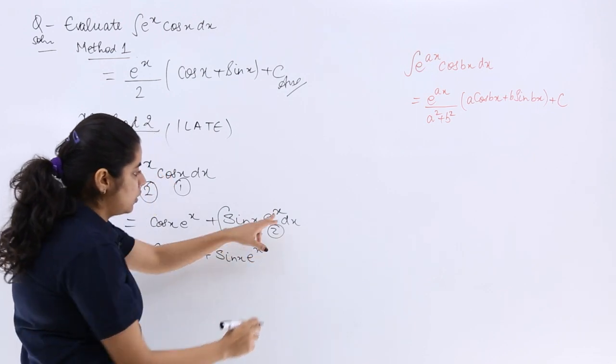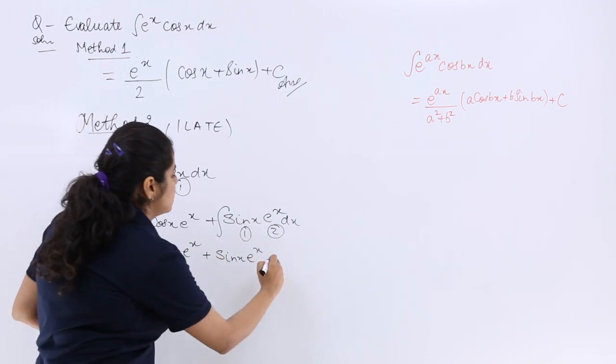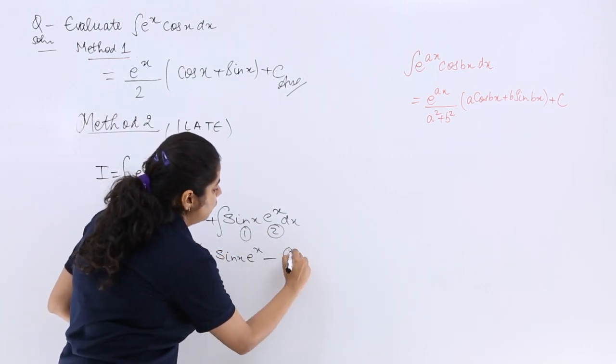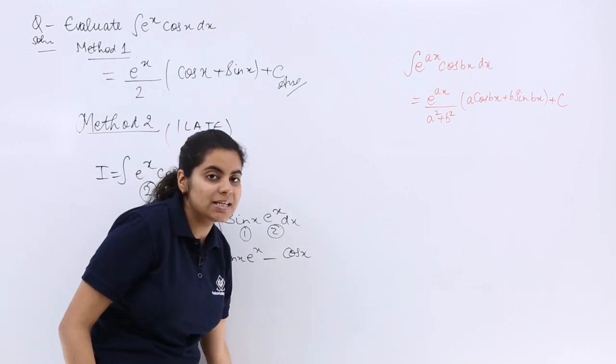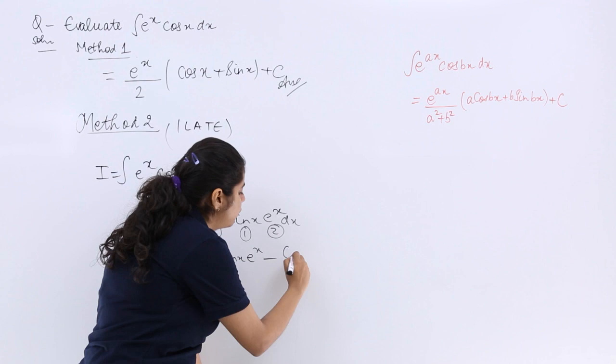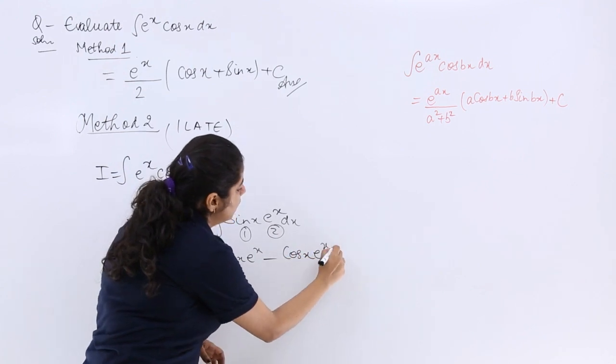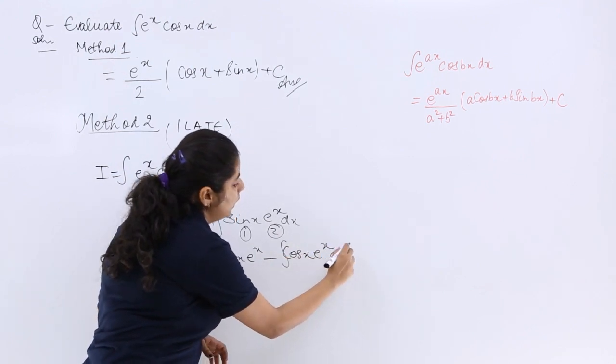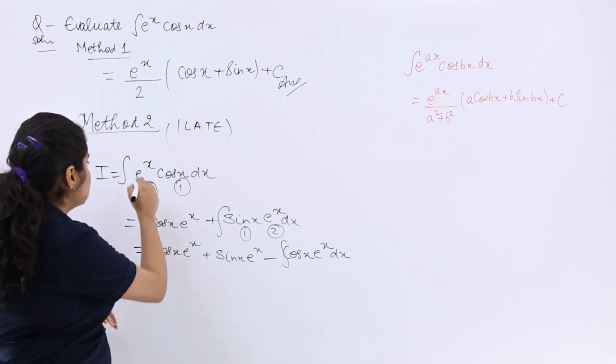into integration of second minus differentiation of first, sin x differentiation is cos x, let me write cos x properly, minus differentiation of first into integration of second, whole integration. This is your I.